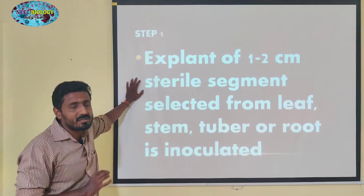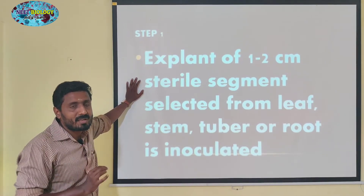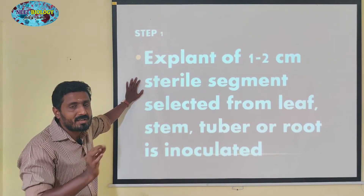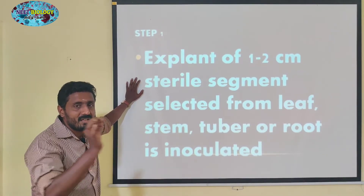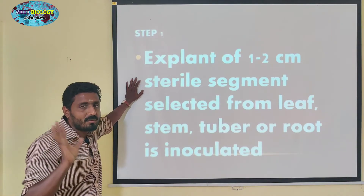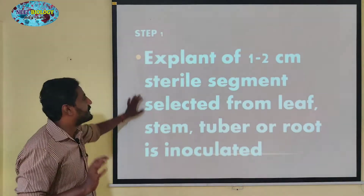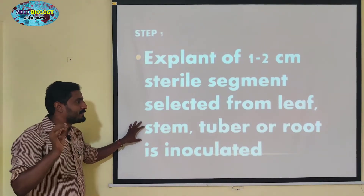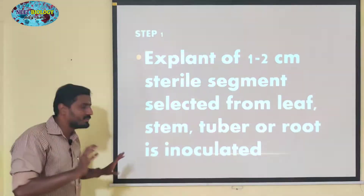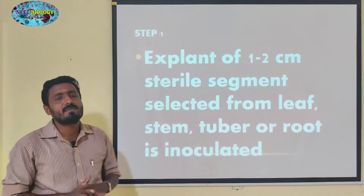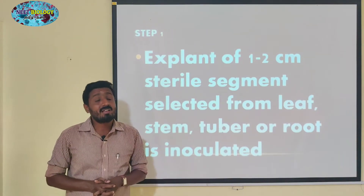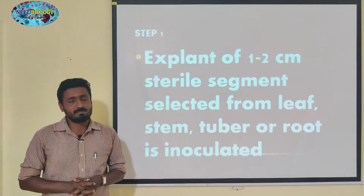Step one, callus development. The explant can be selected from the leaf, stem, tuber, or root. So, any kind of organ we can choose.